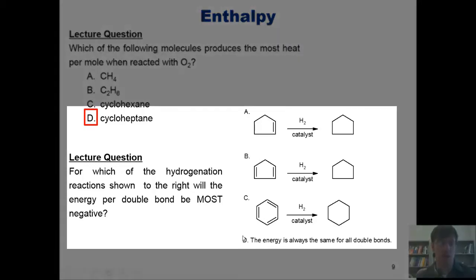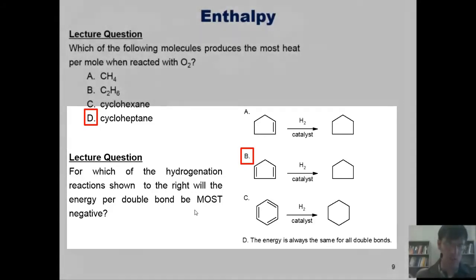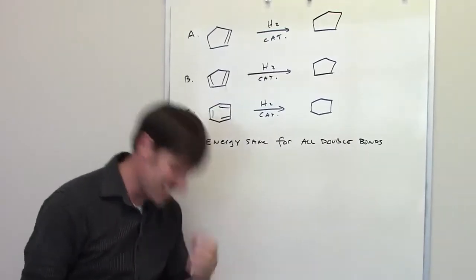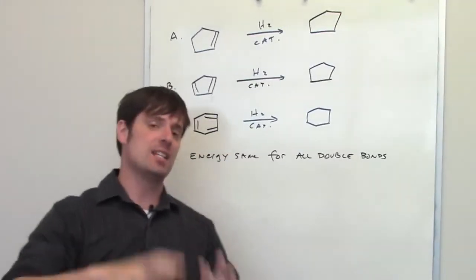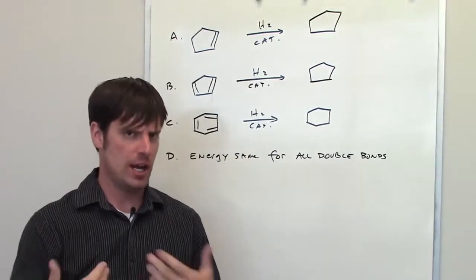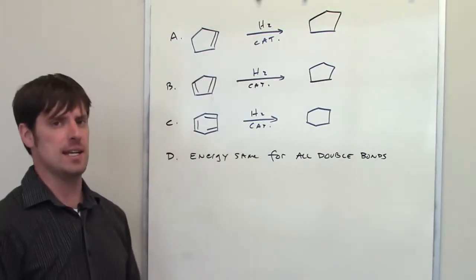In this question we're asked for which of the following hydrogenation reactions will the energy per double bond be the most negative. The correct answer is B, and I'll explain why. We're given a series of hydrogenation reactions — reactions in which double bonds are exposed to hydrogen and a catalyst — which convert double bonds into single bonds.